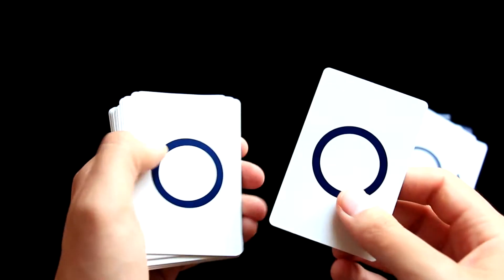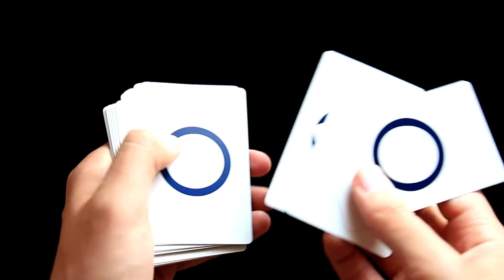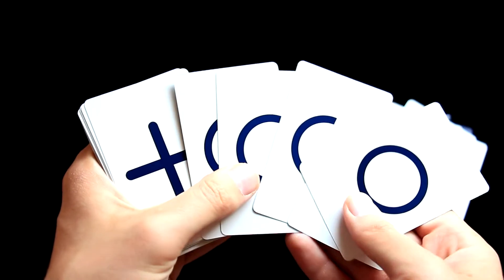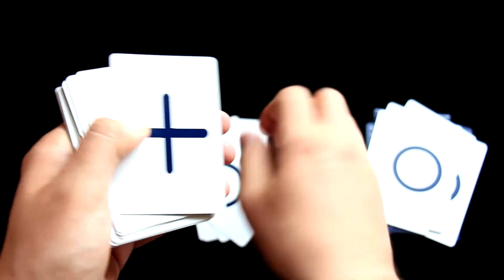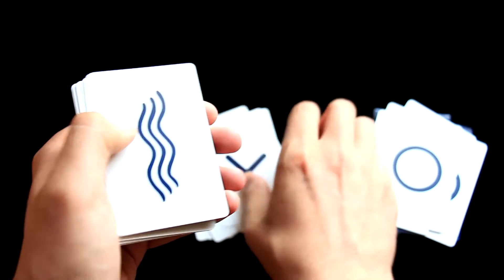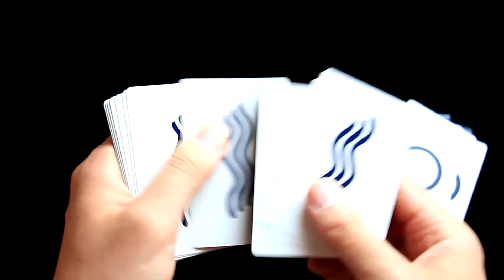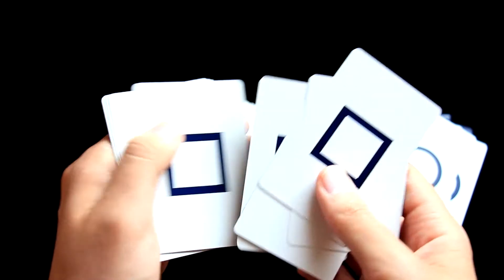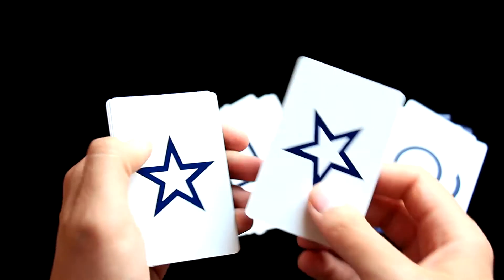Here we have normal ESP cards. As you know, all ESP decks have five circles, five crosses, five wavy lines, five squares, and finally five stars.